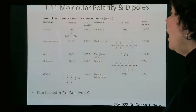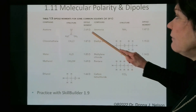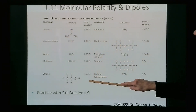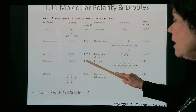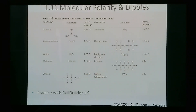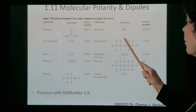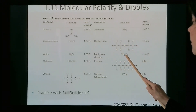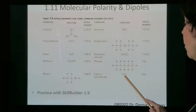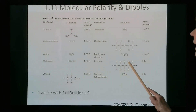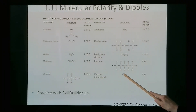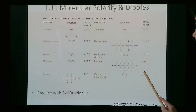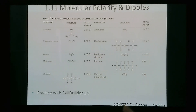Dipole moments for other organic compounds are given in Table 1.5. Acetone has a fairly high dipole moment. Going down, methanol and ethanol do not have as high a dipole moment. The more symmetric the molecule, the lower the dipole. For carbon tetrachloride, there are highly electronegative atoms, but they all point in opposite directions, so the vector sum is zero — each individual carbon-chlorine bond is polarized, but the vector sum is zero.